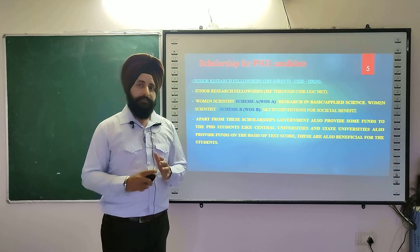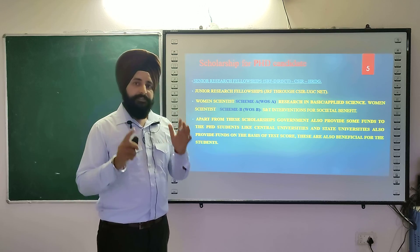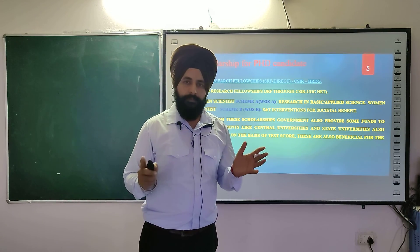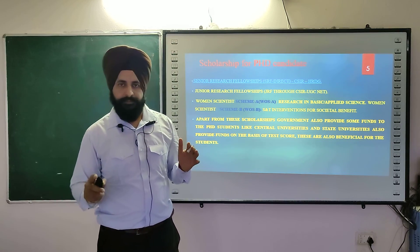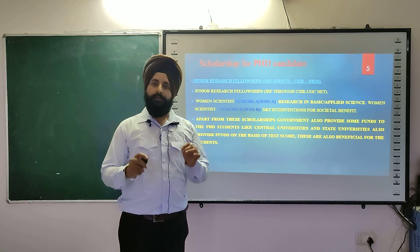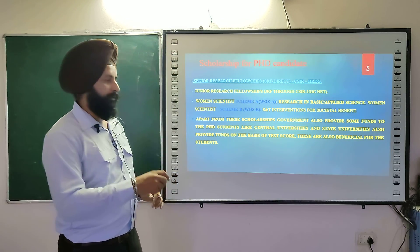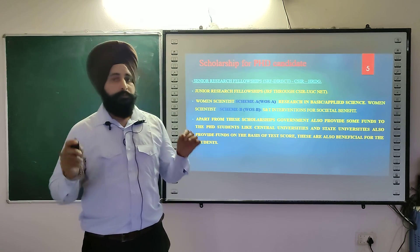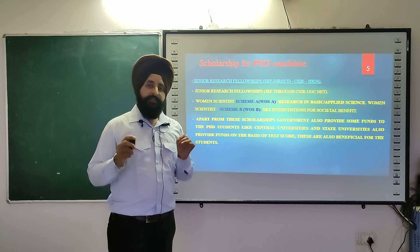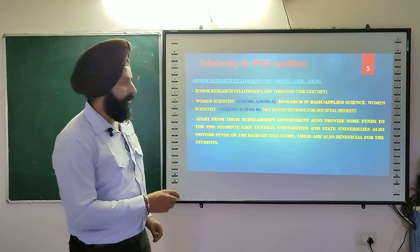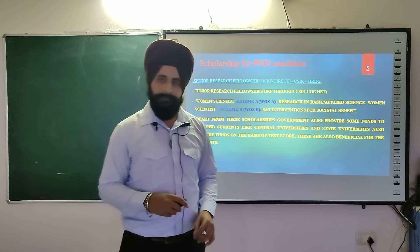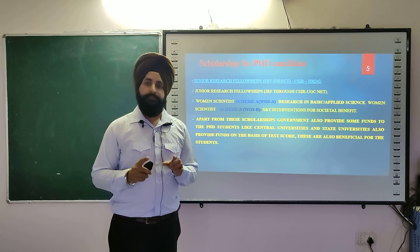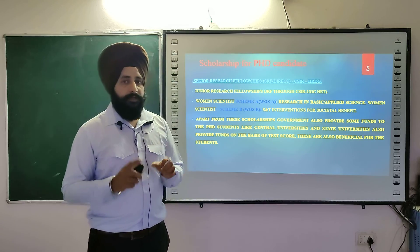There are two methods to get a junior scholarship: either you do PhD under a guide who has a project and you get involved in that funded project, or secondly you write your own project proposal that is novel and useful for society, and you apply it to DST, DBT, or ICMR.